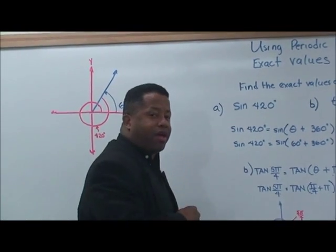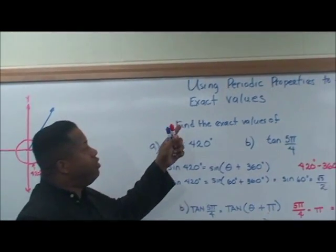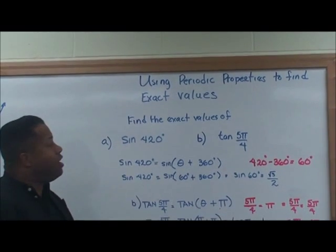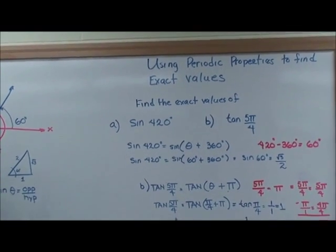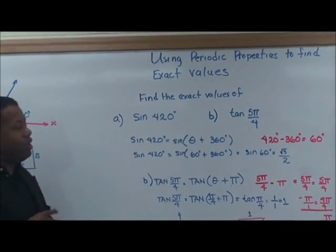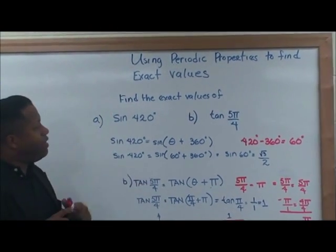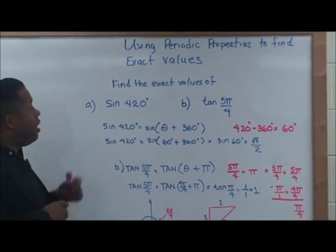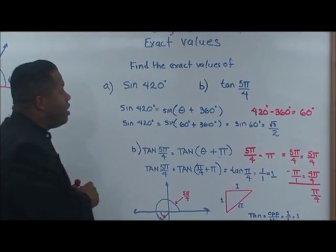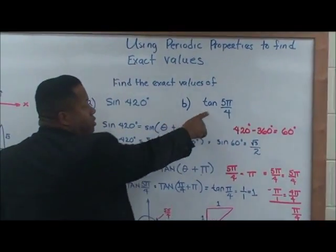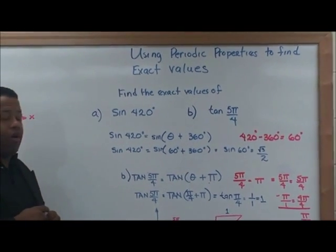Hello and welcome back. Today we're going to talk about using periodic properties to find exact values. Let's talk about a problem: find the exact values of sine 420 degrees and also tan 5π over 4.